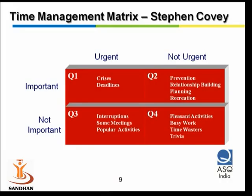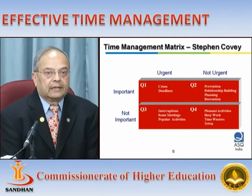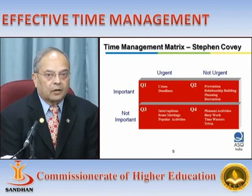Most of the time we are engaged in quadrant one. According to Dr. Covey it should be no more than five to ten percent — that is known as firefighting. There are some fires burning that you need to put out, but don't focus all your time on urgent issues. They should occupy a little bit of your time; get it out of the way and go to quadrant two.